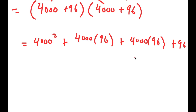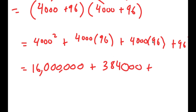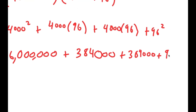Now, 4000 squared is simple: 4 squared is 16, and 1000 squared is 1,000,000, so I add 6 zeros to get 16,000,000. For 4000 times 96: 4 times 96 is 384, so adding three zeros gives 384,000. There are two such terms, and 96 squared equals 9,216. So I have 16,000,000 plus 384,000 plus 384,000 plus 9,216.